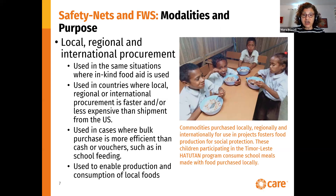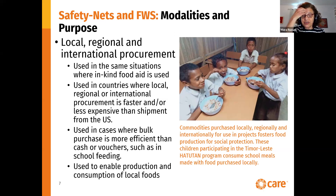In this particular case of Timor-Leste, which I am showing here, the government purchases food from farmers in Timor-Leste and distributes it as part of the Ha-To-Tom program. These children have the opportunity to consume locally purchased food in their school meals. This can also enable production and consumption of local foods, and it can act as an incentive to farmers to produce the foods that are going to be purchased for school feeding.